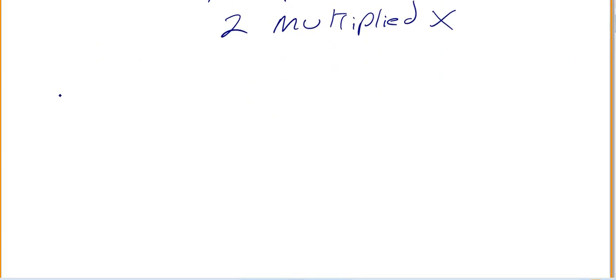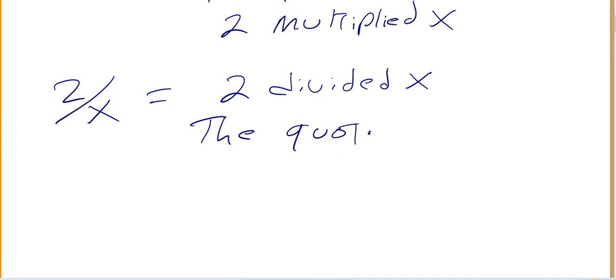So, all kind of the same thing. What if we had 2 divided by x, so something like that? Well, you would just say 2 divided by x, or you'd say the quotient, the quotient of 2 and x, not quite as many words for division.